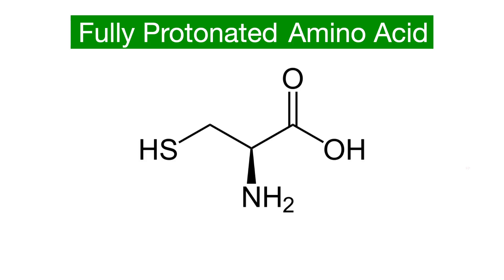Start by imagining the amino acid in a very low pH solution, like pH of 0, a solution saturated with protons. The C-terminus stays protonated, the N-terminus becomes protonated, obtaining a positive charge, and any acidic groups on side chains either stay protonated, like this one, or become protonated, like several other amino acids.